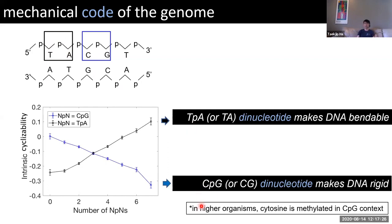Interestingly, in higher organisms including humans, cytosine C is methylated and modified chemically only in the CpG context — if there's a G next to it, with some exceptions. What we did was measure many different sequences and ask: if you look at 50 base pair sequences that have zero, one, two, three, four, five, six, or seven TpA or TA dinucleotides, what are their average bendability or cyclizability values? It turns out if you have more TpA dinucleotides, the DNA becomes more bendable.